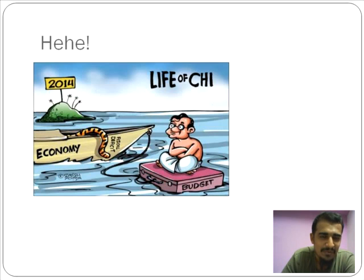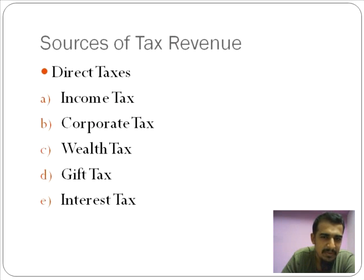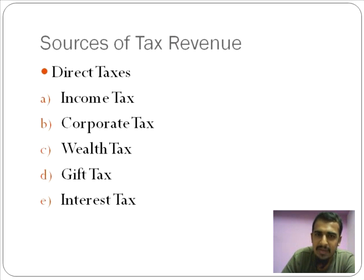Let's look forward to the 2014 budget by Chidambaram. Where does the government actually go about receiving revenue? One major source of revenue for the government is taxes. Looking at direct taxes, the first category is income tax. Income tax is a tax that is levied on the salary of an individual.